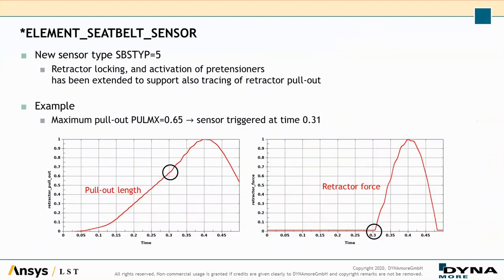Another seatbelt feature is the new sensor type SPS type 5, for retractor locking and activation of pretensioners. It has been extended to support tracing of retractor pullout. If you define a maximum pullout length, for instance 0.65, this sensor is triggered to lock the retractor. From that point on, the retractor force builds up. This is another new feature for seatbelts.